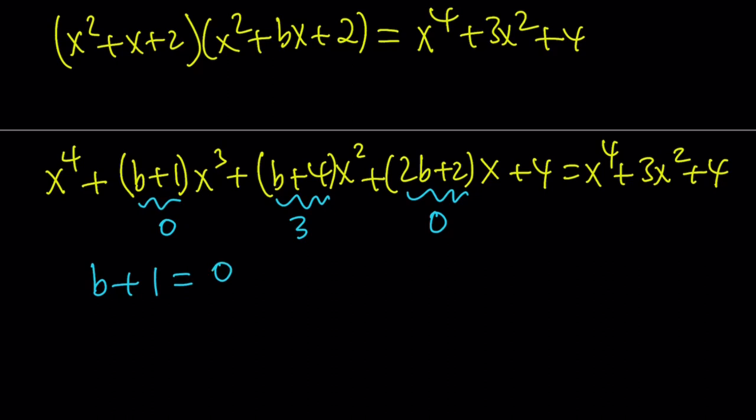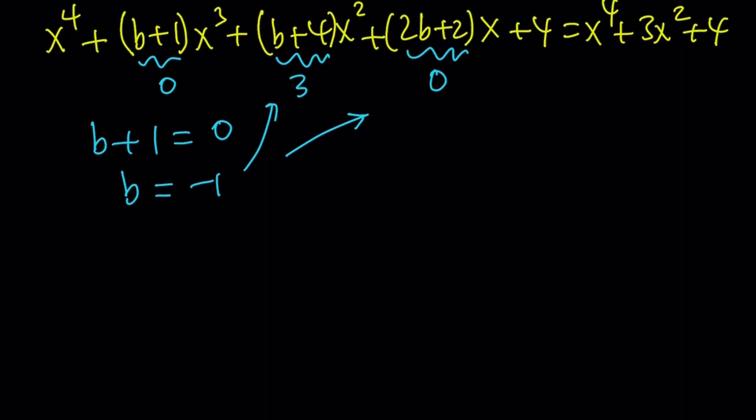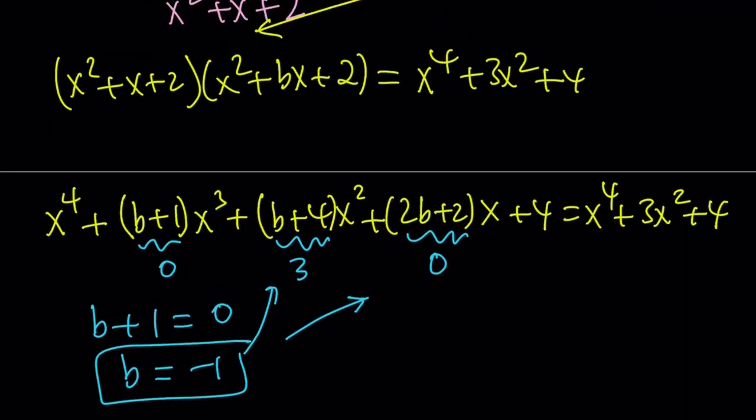b plus 1 is equal to 0 gives us b equals negative 1. You can always check with these, because if they don't check, then this is inconsistent. That means it's not going to work. Okay, so b equals negative 1 gives us the answer, right?